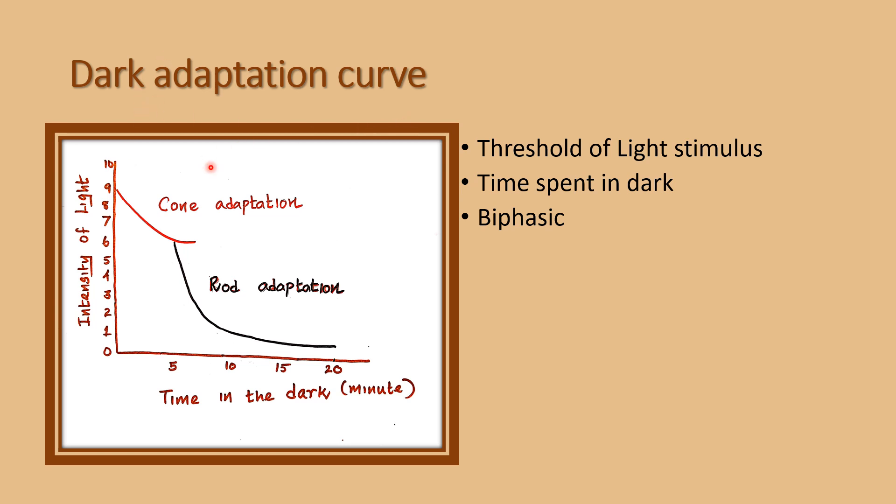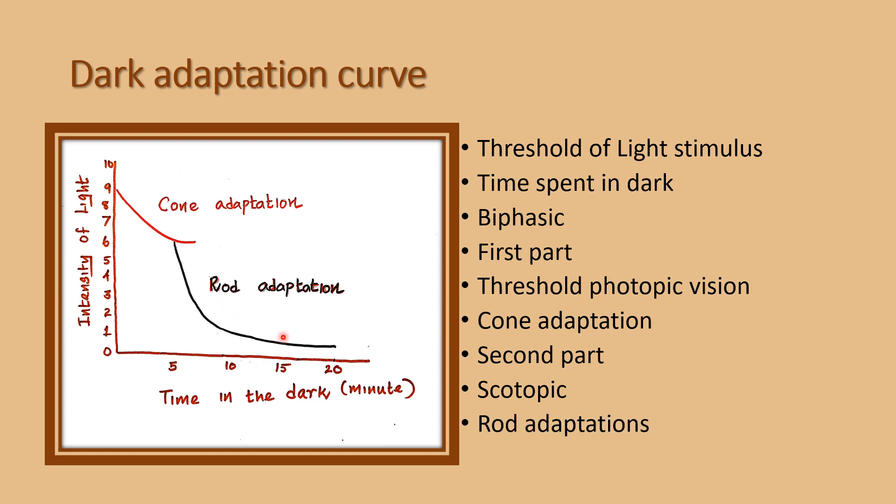It is a biphasic curve. The first part is the threshold of photopic vision, which is mainly dependent on cone adaptation. The second part is the threshold of scotopic vision, which occurs in the dark room and is mainly due to rod adaptation.